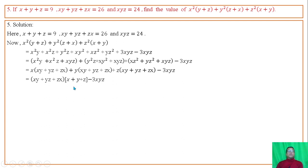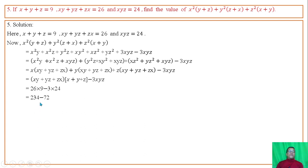The value of xy plus yz plus zx is 26. The sum x plus y plus z is 9. The product of x, y, z is 24. Substituting these values: 26, 9, 3, and product gives 24. Computing: 8 times 2 times 3 times 4 minus 72 equals the answer, and after subtraction we get the final value.